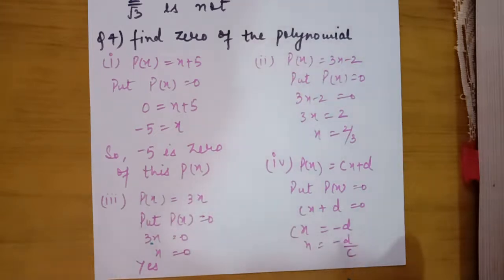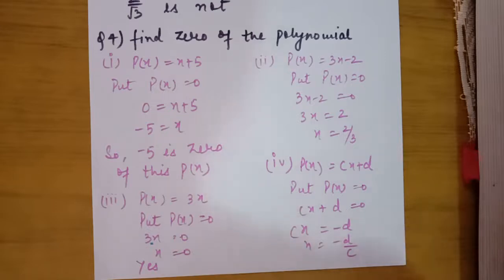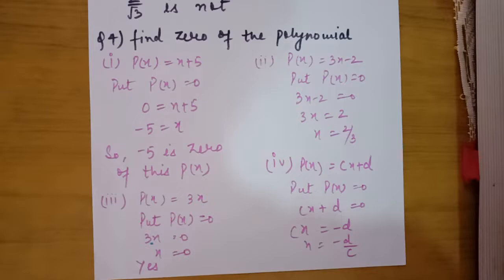Exercise 2.2 is now complete. In our second lecture we also discussed the remainder theorem, with examples of how to apply it using the long division method. Now I will explain two more parts of exercise 2.4, question number 1.